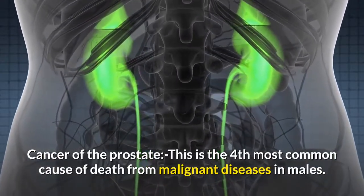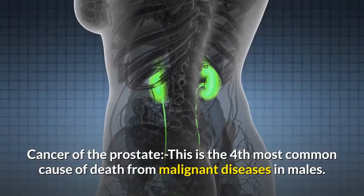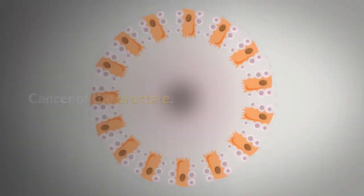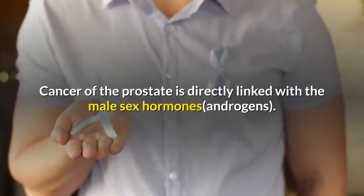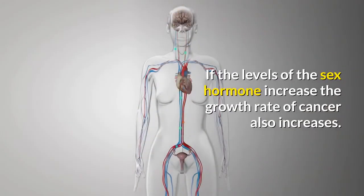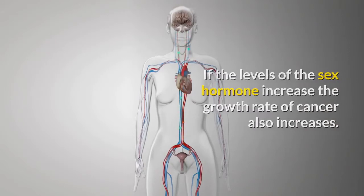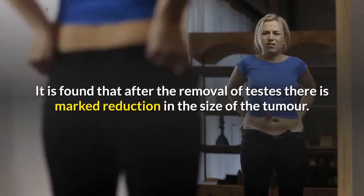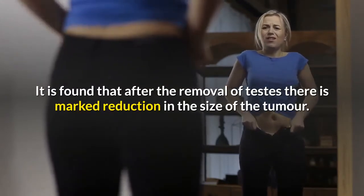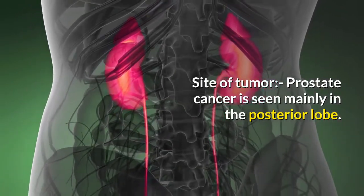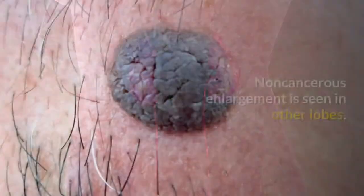Three, cancer of the prostate — this is the fourth most common cause of death from malignant diseases in males. Cancer of the prostate is directly linked with the male sex hormones, androgens. If the levels of the sex hormone increase, the growth rate of cancer also increases. It is found that after the removal of testes, there is marked reduction in the size of the tumor.